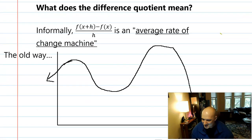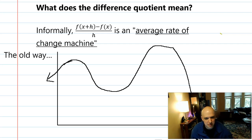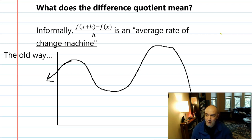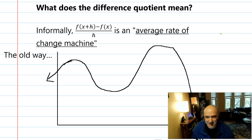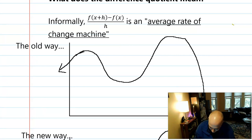So what does this strange expression f(x+h) minus f(x), all over h, even mean? Why do we care? For pre-calculus students, although the next part is interesting, you don't need to know it — you'll learn it in calculus and use it all the time. For us in pre-calc, it's just interesting extra. But I love to talk about interesting extra things, so we're going to talk about it. This difference quotient is an average rate of change machine.